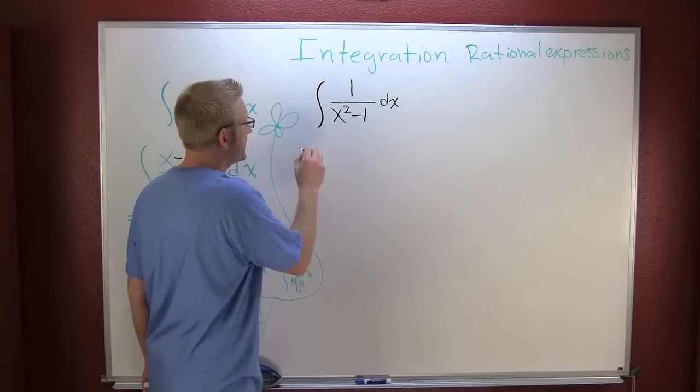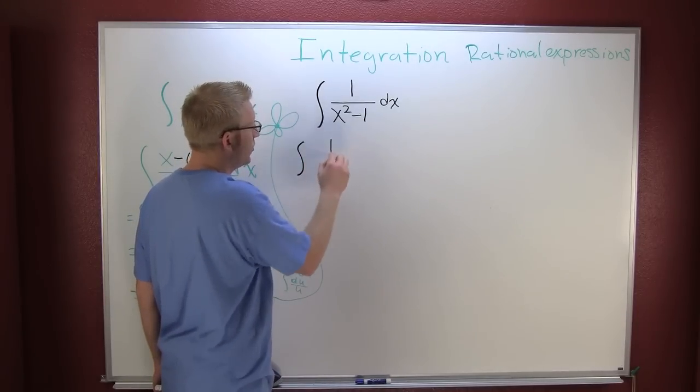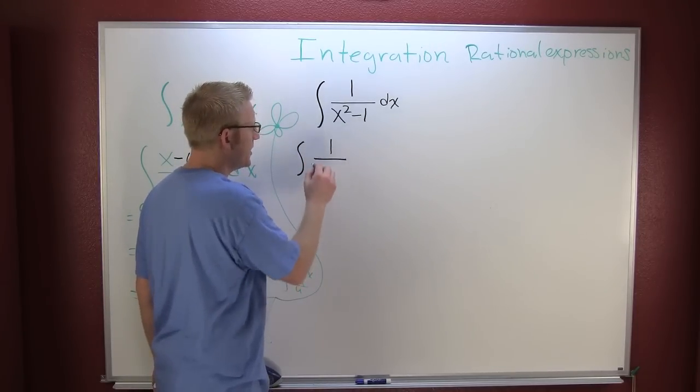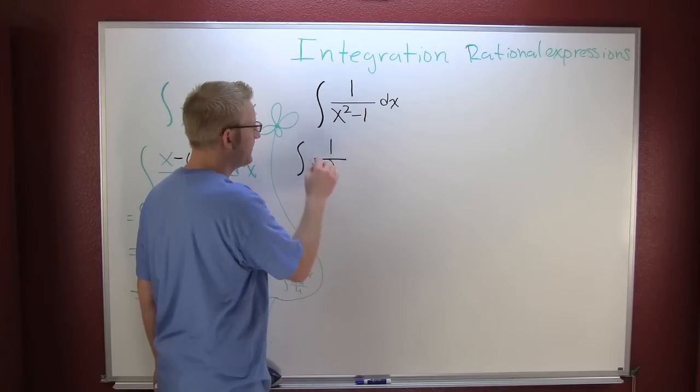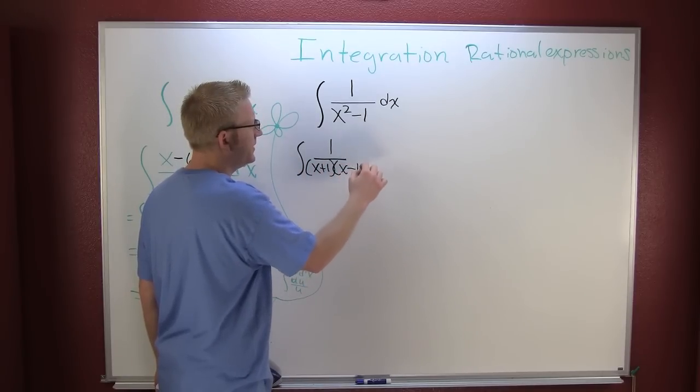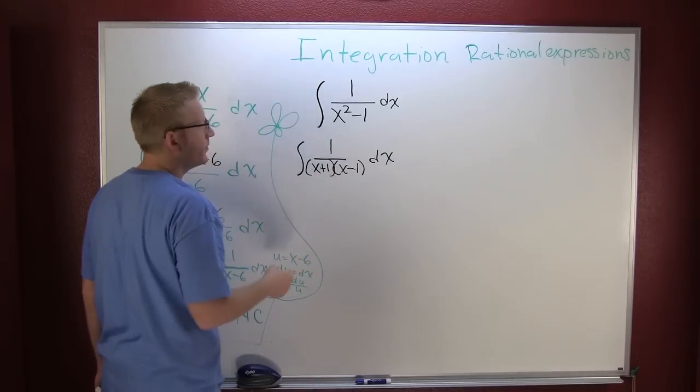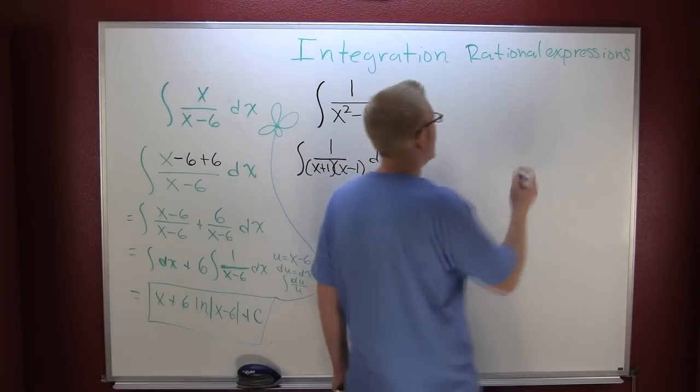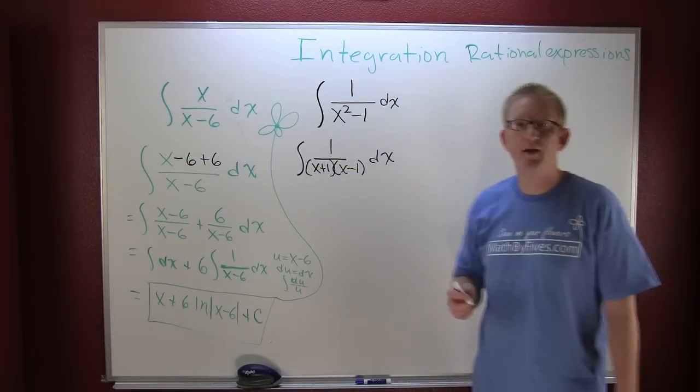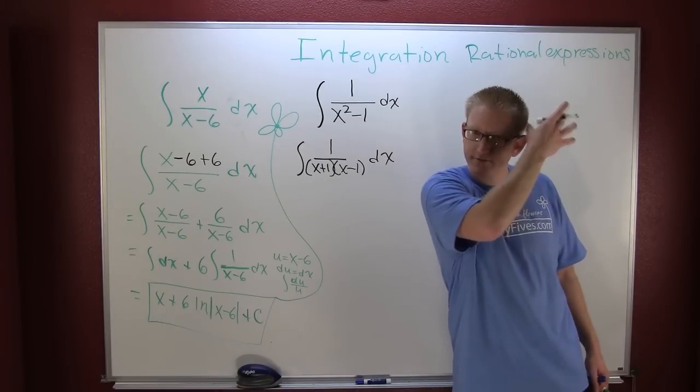This is 1 over, that's the difference of squares, x plus 1 times x minus 1 dx. Now what I'm going to attempt to do over here on the side is perform an operation called partial fractions.